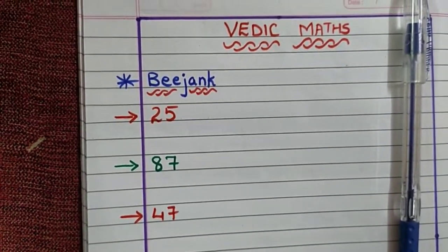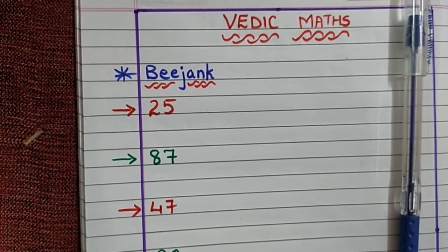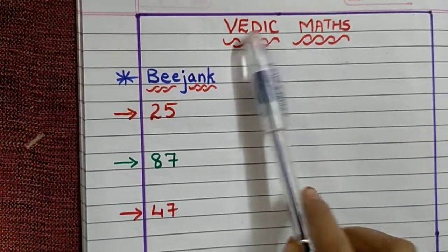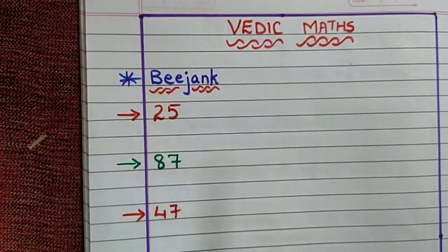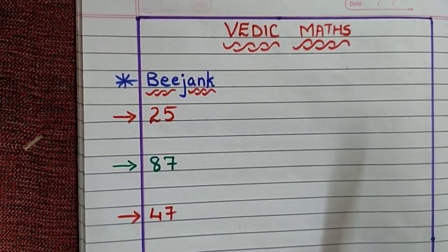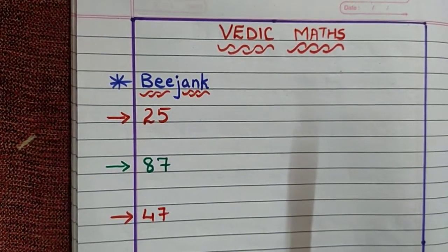Hello friends, you are welcome to my channel Study Classroom 110. Today we are going to learn Vedic Maths. The first topic is Beejank. So you all might be thinking what actually Beejank means. Beejank is the sum of the digits of a number.